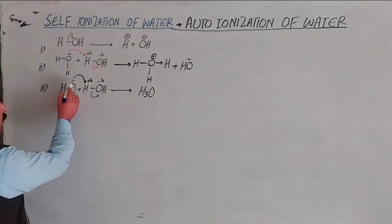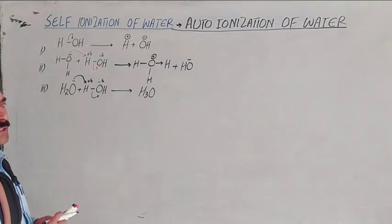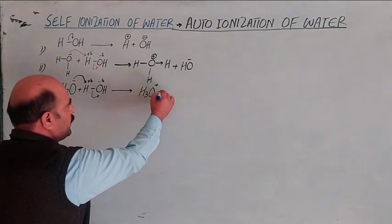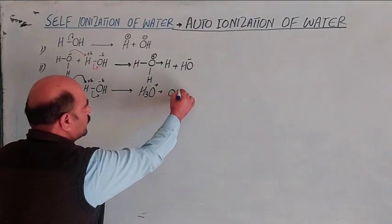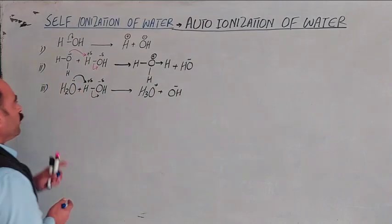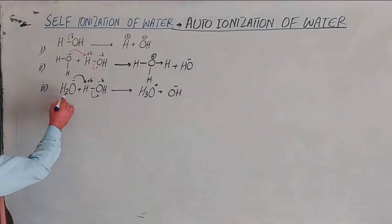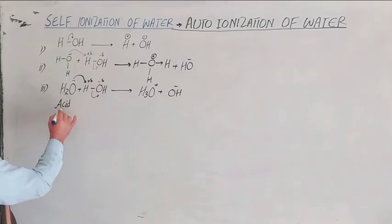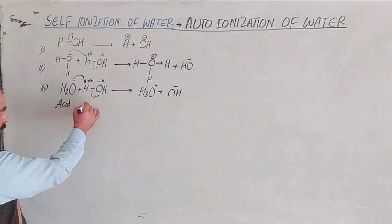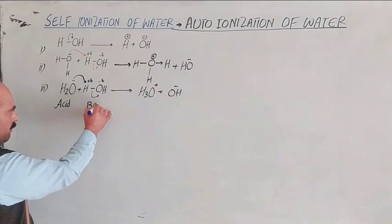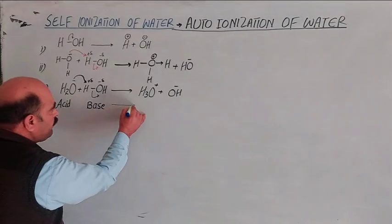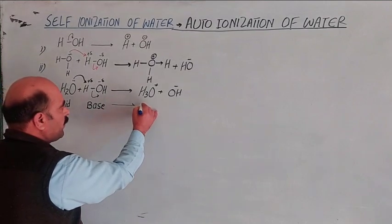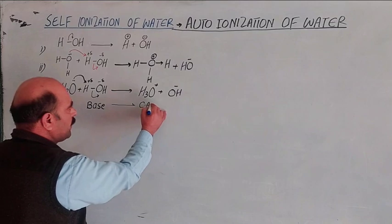The second water molecule — a deep water molecule — donates a lone pair on oxygen and shares it with the hydrogen ion through a coordinate bond, converting into H3O⁺ (hydronium ion) plus hydroxide ion OH⁻. This water molecule acts as a proton acceptor, which is a base. Hydronium ion is formed because the proton is provided by the acid; it is a conjugate acid.